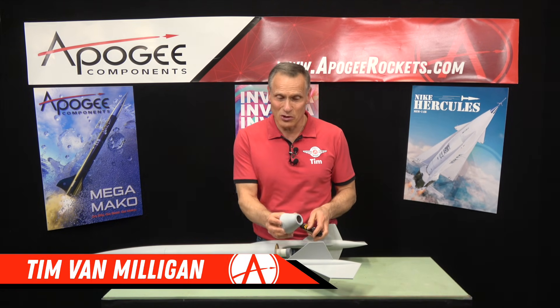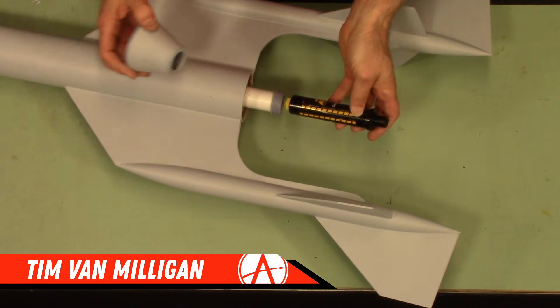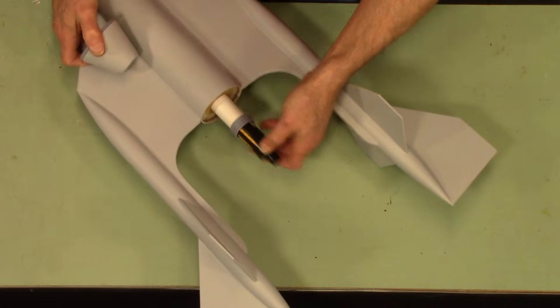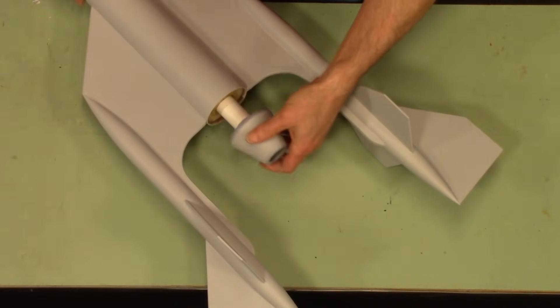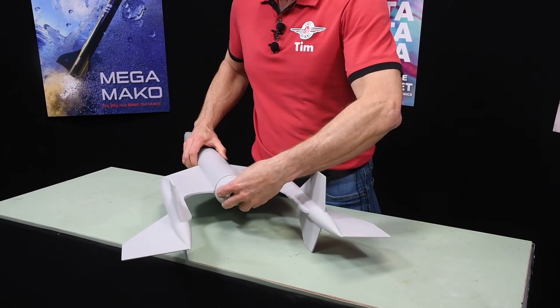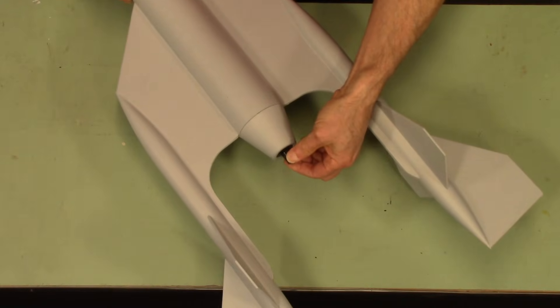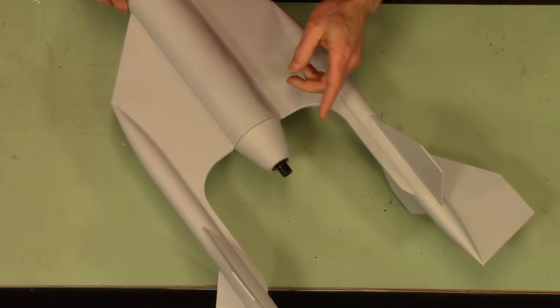Hi, I'm Tim Van Milligan from Apogee Components. We have these great tail cone retainers and what they do is hold your rocket engine inside your rocket. They simply screw on and hold the engine to prevent it from coming out the back end of the rocket.